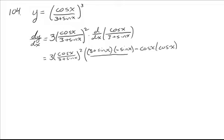All over the denominator squared. 3 plus sine x quantity squared. Notice this denominator is the same as this denominator, so we'll be able to combine those together when we do some simplifying.